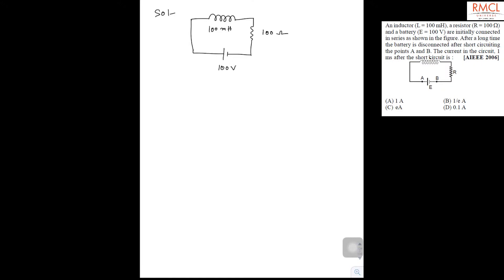Now we have to find the current in the circuit when this battery is removed after short circuiting. Suppose it is short circuited and this battery is removed. Now it becomes a simple circuit having only an inductor and a resistor.